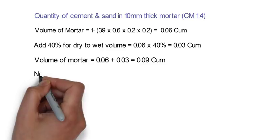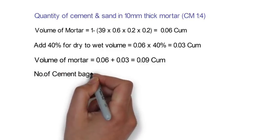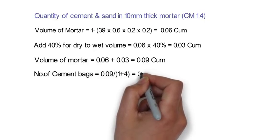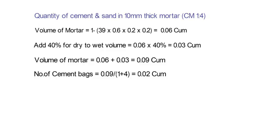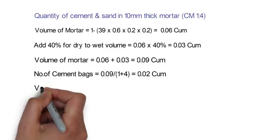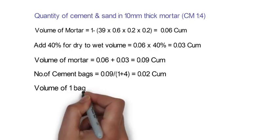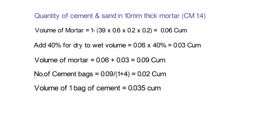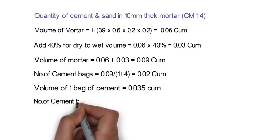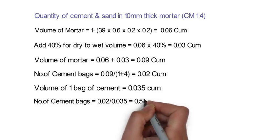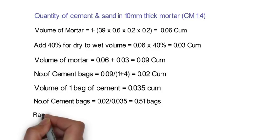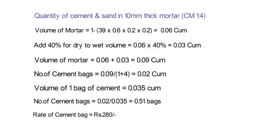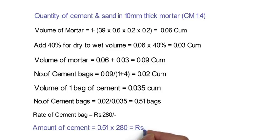Now we will calculate the number of cement bags. The formula is 0.09 divided by (1 plus 4) is equal to 0.02 cubic meter, where 1:4 is the proportion of cement mortar — cement part is 1 out of 5. The volume of 1 bag of cement is 0.035 cubic meter, so we divide by 0.035 to convert to bags: 0.02 divided by 0.035 is equal to 0.51 bags. Considering the rate of a cement bag as 280 rupees, the amount of cement required shall be 0.51 x 280 is equal to 143 rupees.